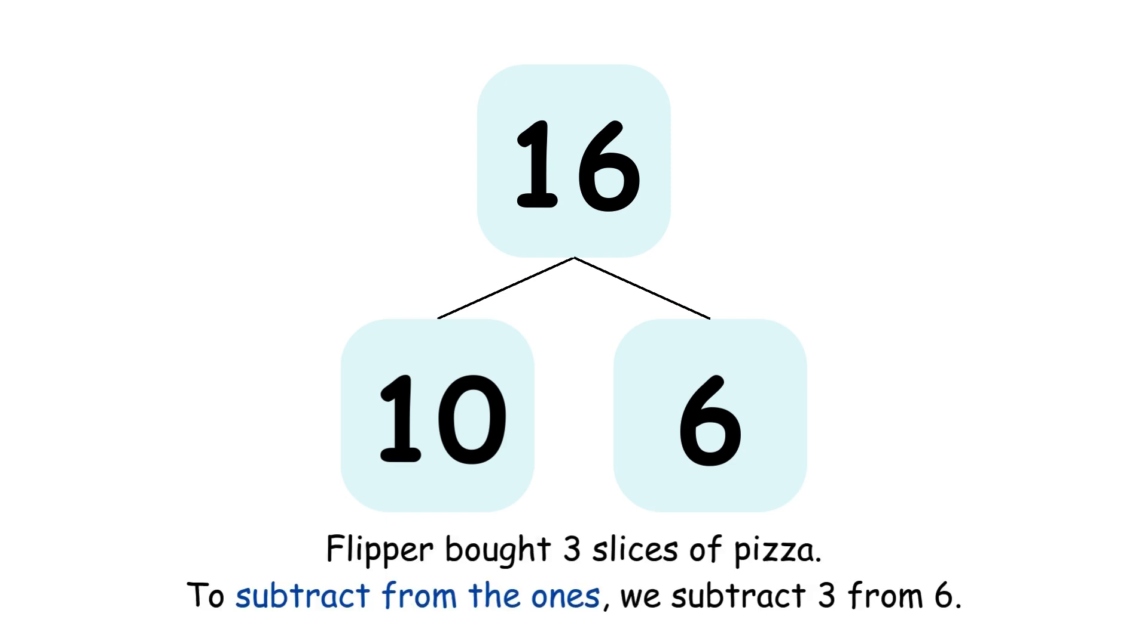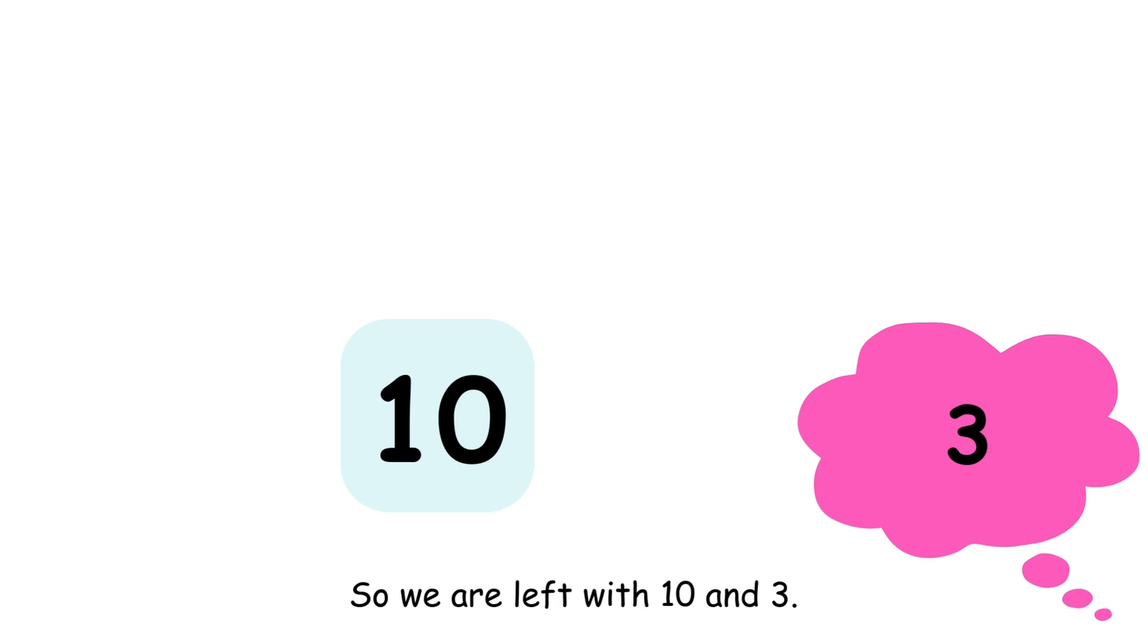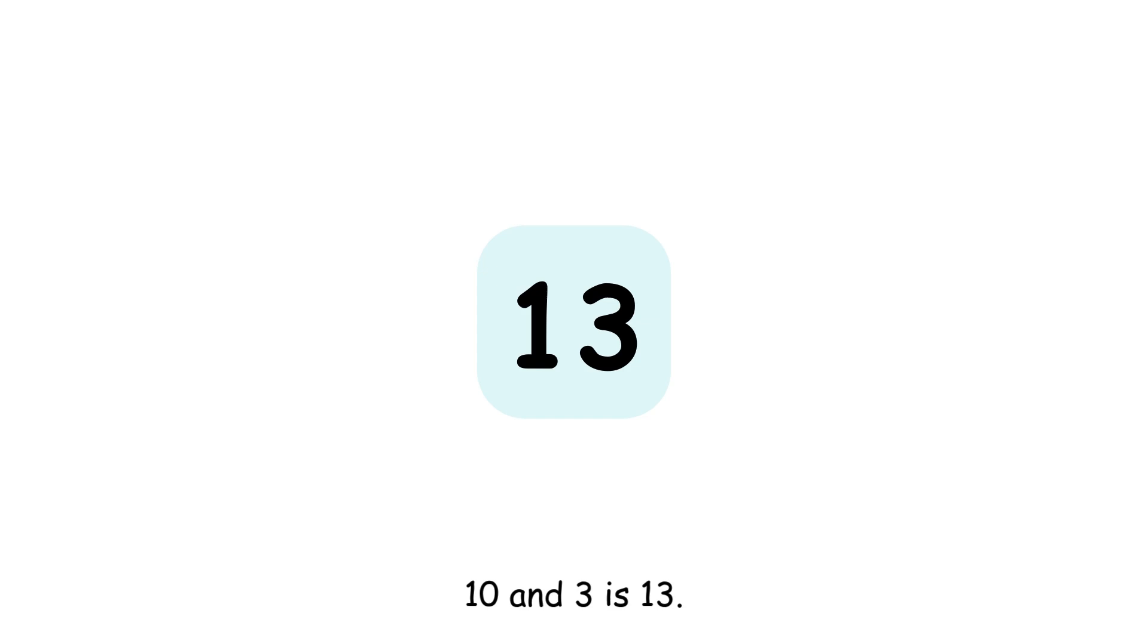Flipper bought three slices of pizza. To subtract from the ones, we subtract 3 from 6. 6 minus 3 equals 3. So we are left with 10 and 3. 10 and 3 is 13.